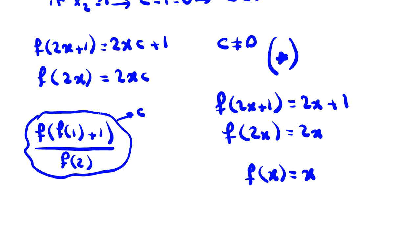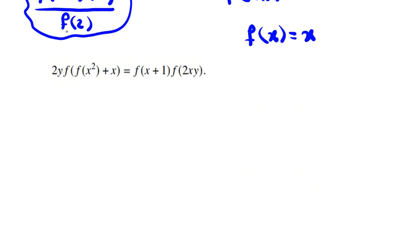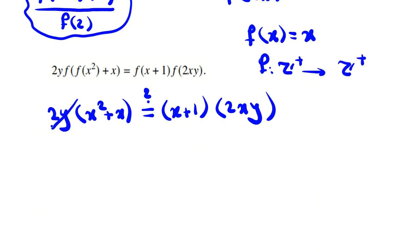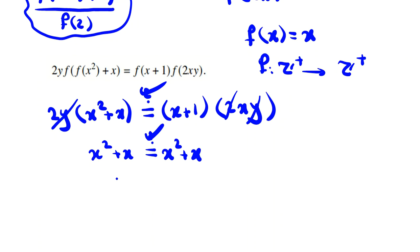The only remaining step is to check our answer in the main equation. If f(x) = x, then f(x²+x) = x²+x and f(x²+x) = x²+x. The left side becomes 2y·(x²+x) and the right side becomes f(x+1)·f(2xy) = (x+1)·2xy = 2xy(x+1) = 2y(x²+x). These are equal, so the solution is verified. We proved f(x) = x.